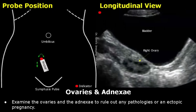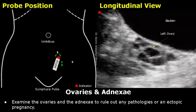Scan all the way from the fundus to the cervix. Make sure you examine the ovaries and adnexa as well. By placing the probe in this manner in longitudinal plane, it is important to rule out an ectopic pregnancy, even if you have located an intrauterine gestational sac. Because in rare cases, a heterotopic pregnancy can occur in which there is a presence of an intrauterine gestational sac as well as a gestational sac outside the uterus — it could be in the fallopian tube or the ovary.